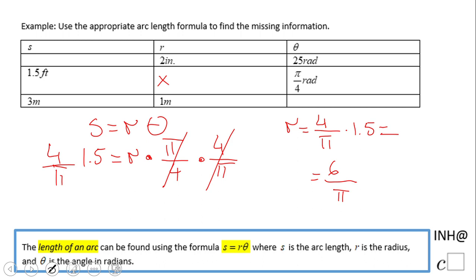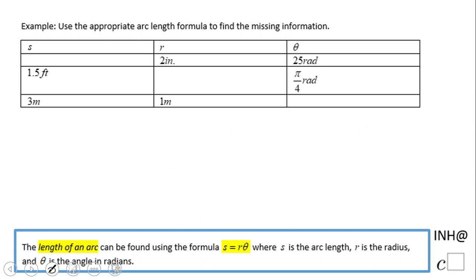6 divided by π. I have something like 1.909859. I think we have enough. Read the problem and see how they want you to approximate.